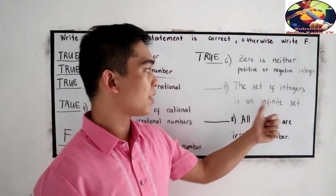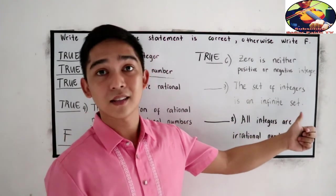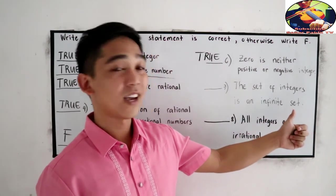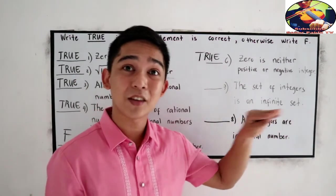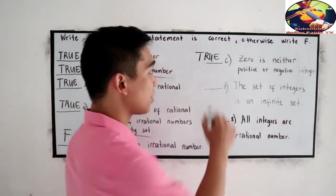Number 7, the set of integers is an infinite set. Yeah, we cannot count the negative numbers and the positive numbers. So this is true.